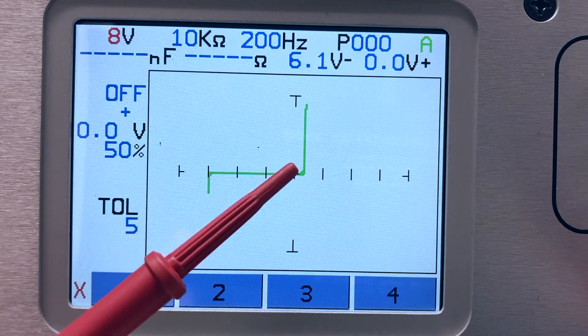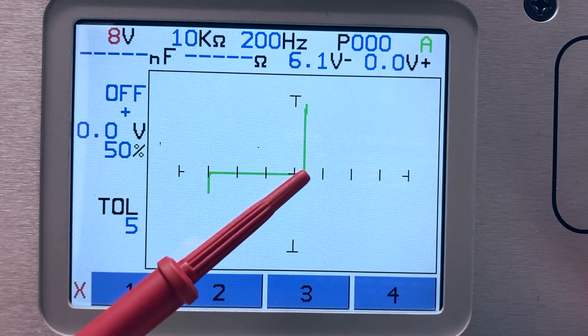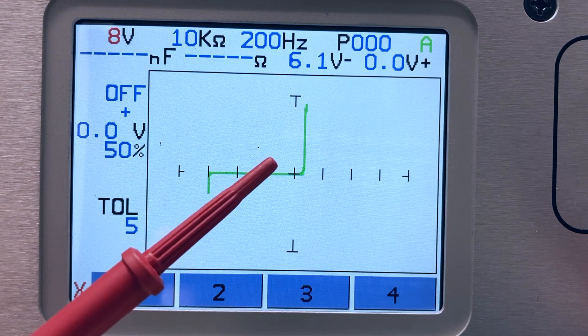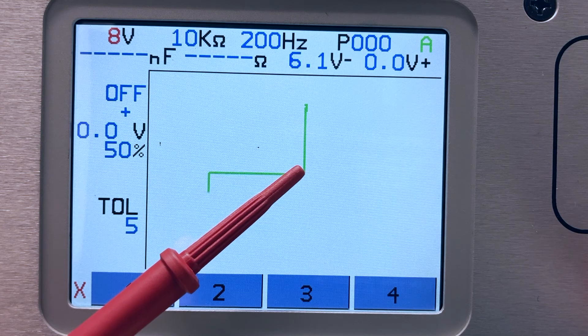This good 6.2 volt Zener diode displayed in green shows clean breakdown points as it makes the transition from the non-conducting to conducting state at 0.6 and 6.2 volts.